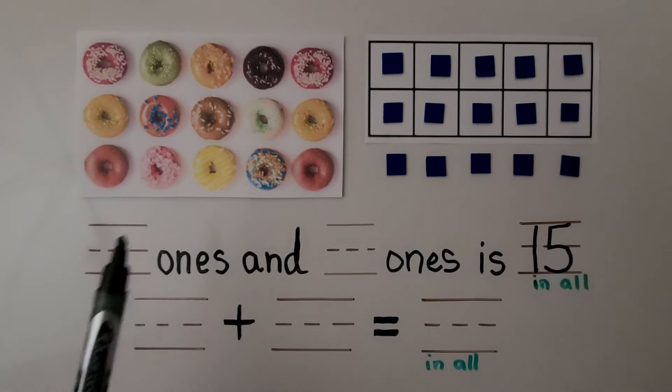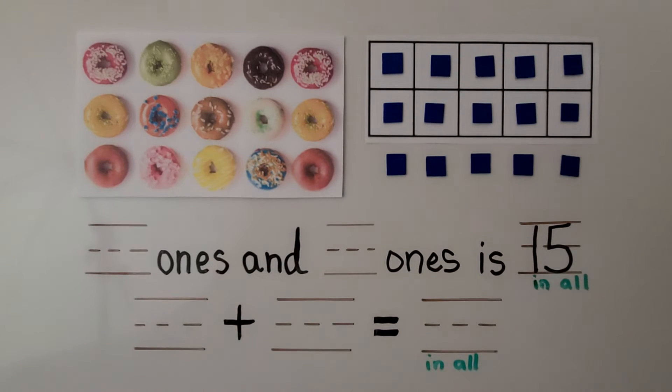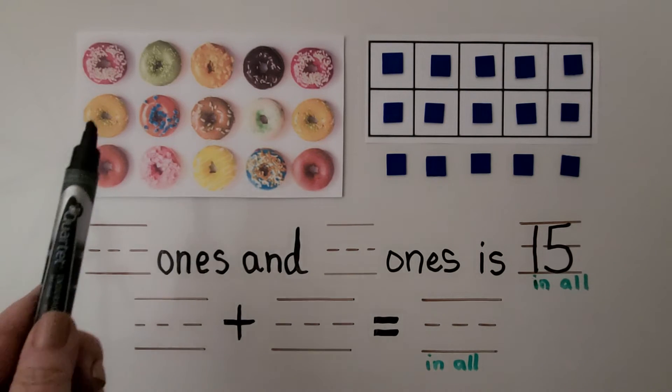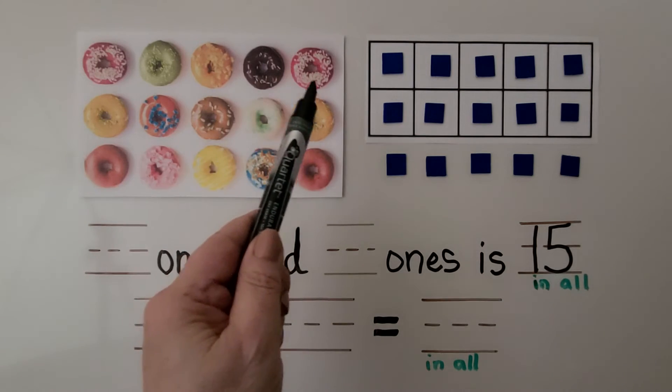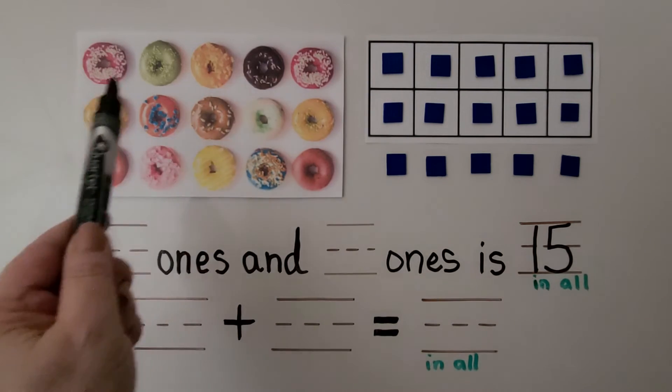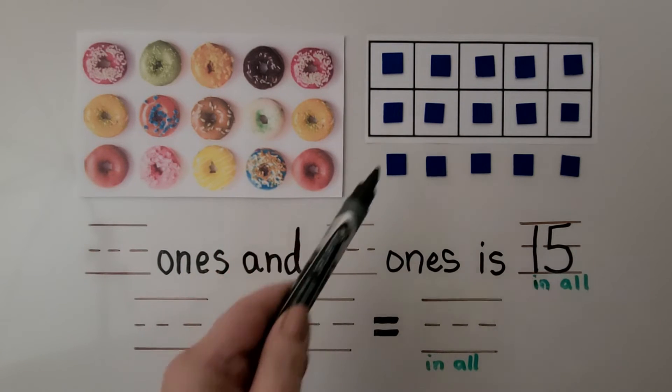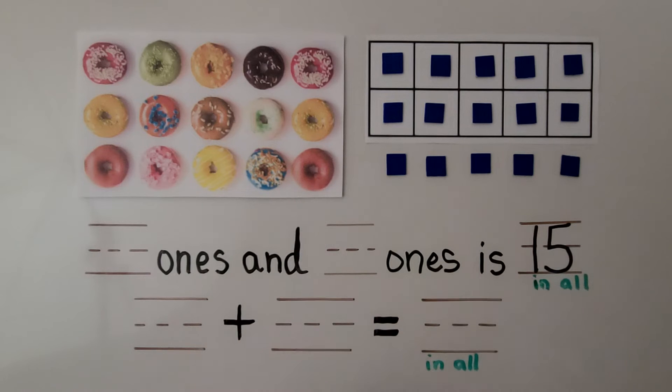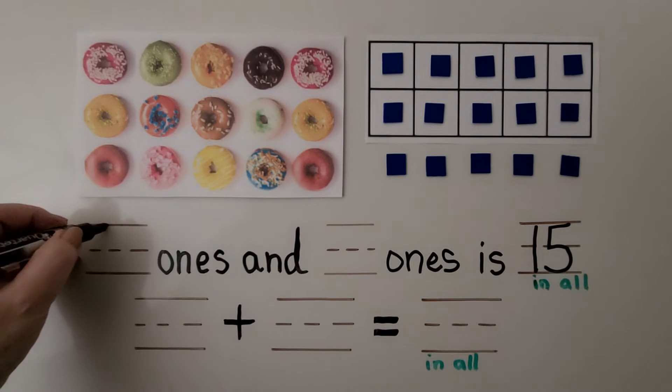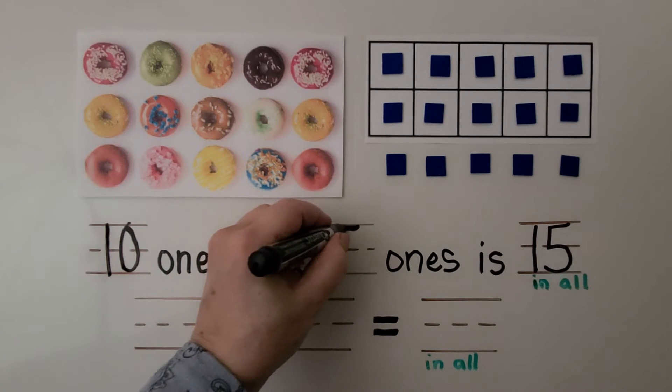Here we have some donuts. Don't they look delicious? When we count, we need to be careful so we don't count the wrong number. The way the donuts are arranged, we can think of a full 10 frame and 5 more. Here we would have a row of 5 and a row of 5. So these two rows make 10, like in a full 10 frame. Then we have 5 more. We would have 10 ones and 5 ones.